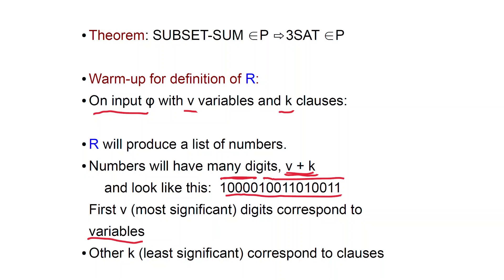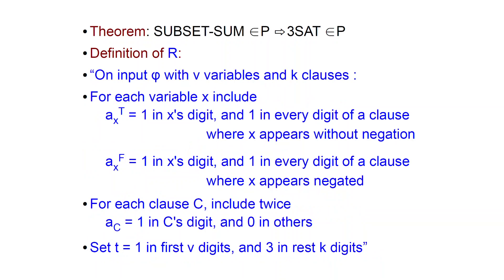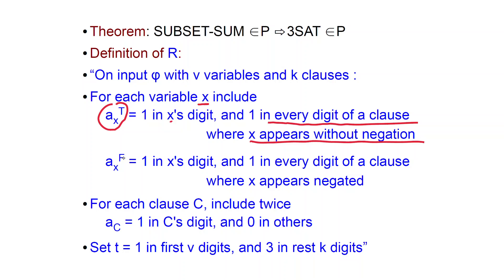Let us see the definition of R and then go to an example. R is given as input a formula phi which has v variables and k clauses. For each variable x, we are going to include two numbers. There is a number ax_true, which has a one in the digit corresponding to x and a one in every digit of a clause where x appears without negation. And ax_false similarly has a one in the x digit and a one in every digit of a clause where x appears negated.